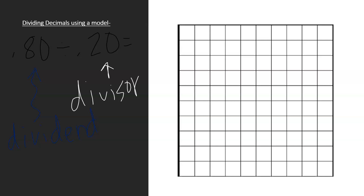Step one for using a model — how many units are in one of the sections? That's right, 10. So if you look at the first number, the dividend, we have an 8 in the tenths place. This is 80 hundredths or eight tenths — they are equivalent. What we will do first is shade 80 hundredths, or eight tenths.